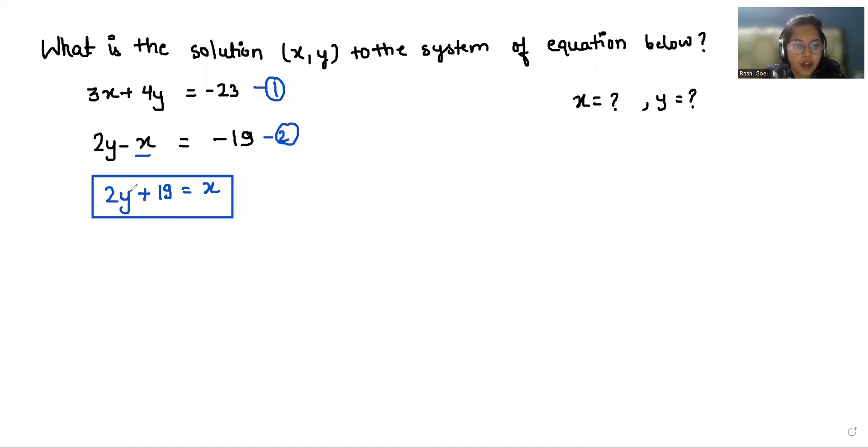Now I'm going to put the value of x in equation number one. So three times 2y plus 19 plus 4y is equals to minus 23. 3 times 2 is 6y plus 19 times 3 is 57 plus 4y is equals to minus 23.